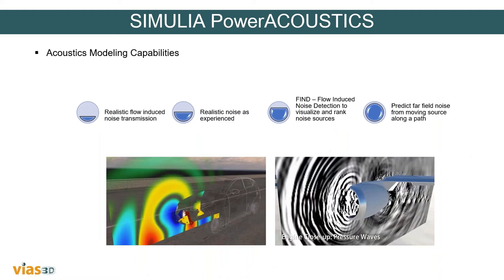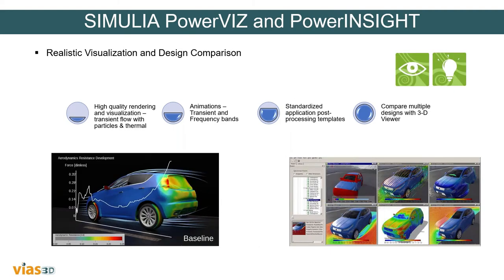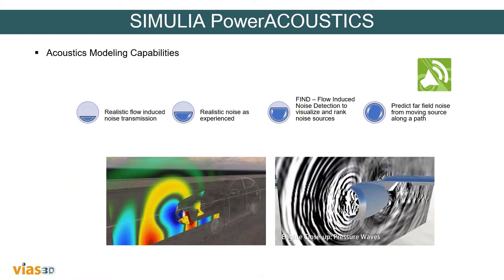PowerACOUSTICS is used for modeling acoustics. It can model realistic flow-induced noise transmission, allowing users to experience realistic noise as perceived by the passenger. It also provides flow-induced noise detection to visualize and rank noise sources, and can predict far-field noise from moving sources along a path.